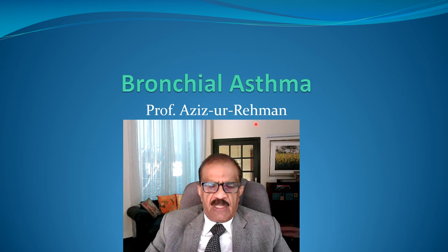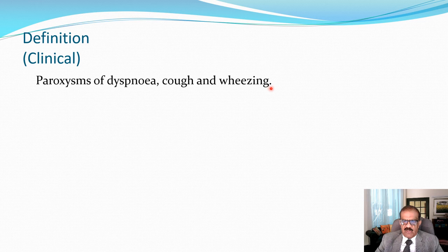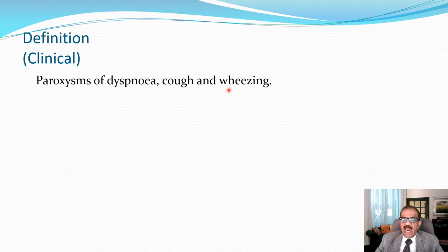Let's start with the definition. If we consider just the clinical presentation or the history of the patient, asthma can be defined as paroxysm of dyspnea, cough, and wheezing — implying that there are symptom-free intervals. The patient may be absolutely asymptomatic or minimally symptomatic and then get an attack. Wheeze is the whistling sound the patient describes. If these symptoms come intermittently with symptom-free intervals, the diagnosis of asthma is very likely.